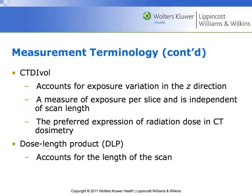CTDI volumetric accounts for exposure variations in the Z direction — it's a weighted average that accounts for volumetric changes. The measure is expressed as an exposure per slice and is independent of the scan length. We use CTDI volumetric quite a bit for radiation dosimetry. The DLP, or dose length product, accounts for the length of the scan — it expresses the volumetric account over a distance.